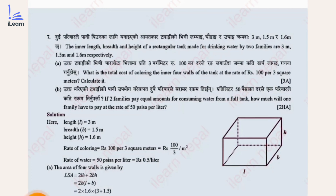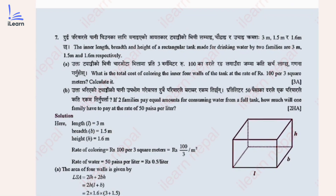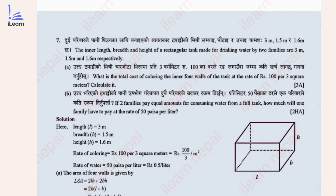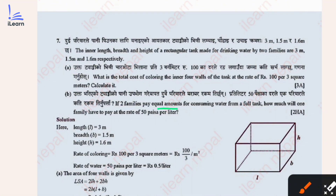Question number 7: the inner length, breadth, and height of a rectangular tank made for drinking water by two families are 3 meters, 1.5 meters, and 1.6 meters respectively. Part (a): what is the total cost of coloring the inner four walls of the tank at the rate of Rs 100 per 3 meter square? Part (b): if two families pay equal amounts for consuming water from a full tank, how much will one family have to pay at the rate of 50 paisa per liter?